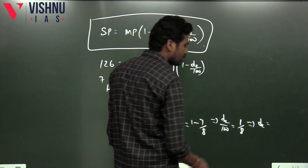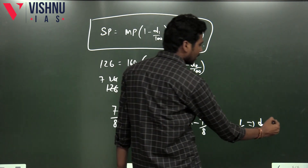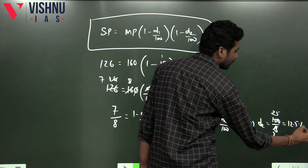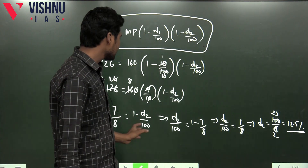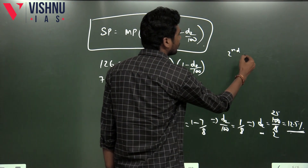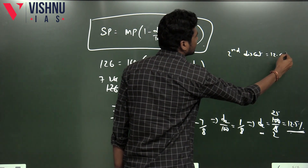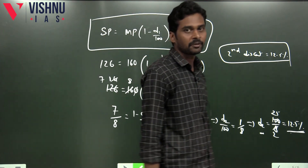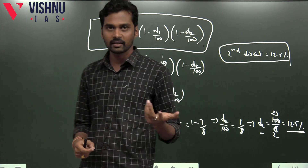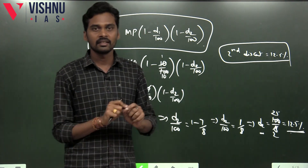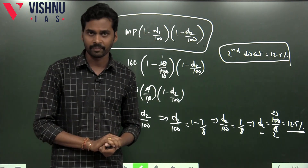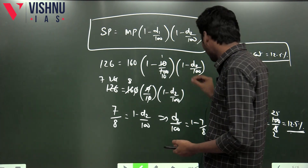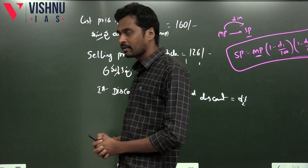So therefore, solving for D2: multiplying across and simplifying, 100 divided by 8 gives us the D2 value. After simplification, you will get 12.5 percent as the second discount. The final answer: second discount is equal to 12.5 percent. We completed both two-mark problems step by step. Even if you know shortcuts, in a descriptive exam you must represent the solution completely in this format. That is the intention. Is it clear? OK, thank you.